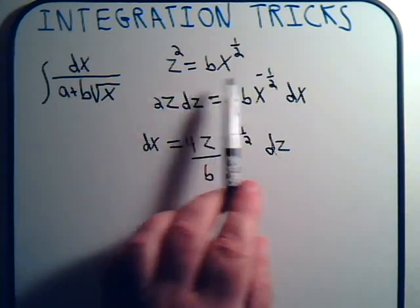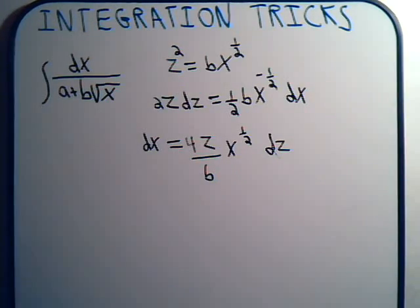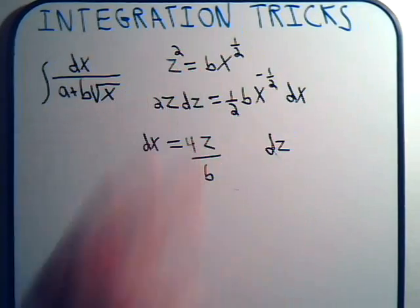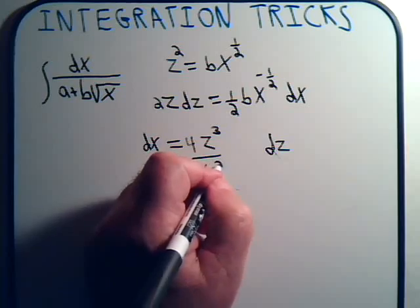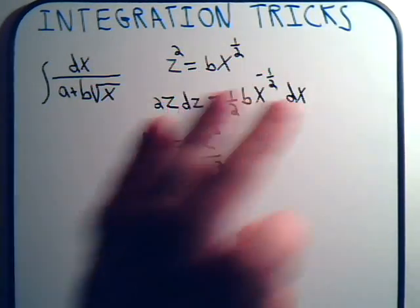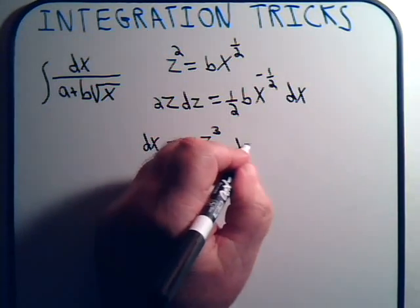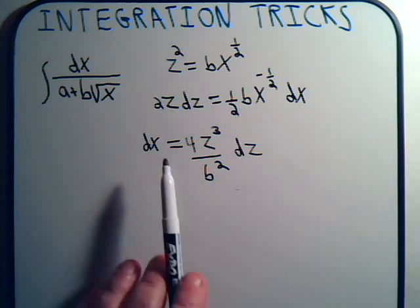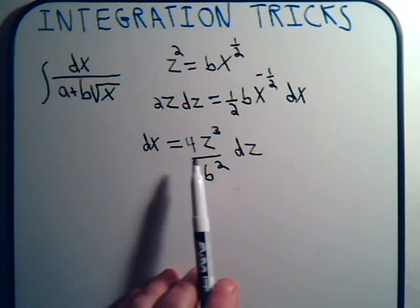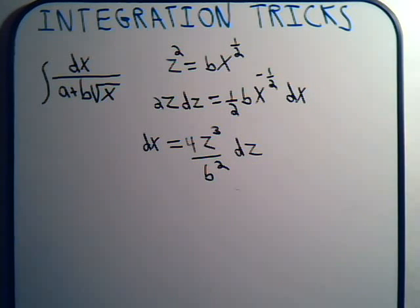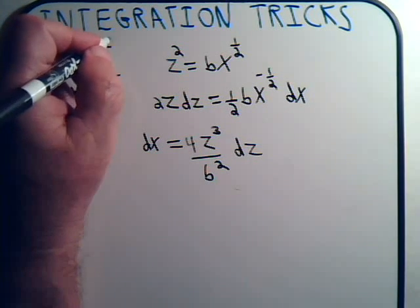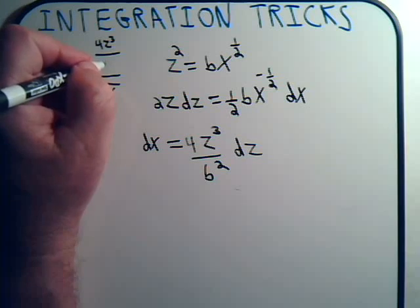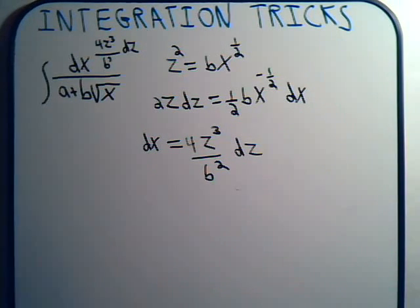And x to the one-half is z squared over b. So we can rewrite this: z squared over b will make a z cubed over b squared. So we have dx expressed in terms of our new variable z. This gives us dx equals 4z cubed divided by b squared dz.